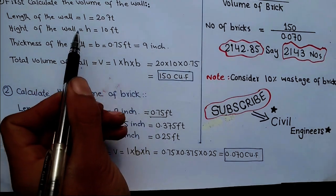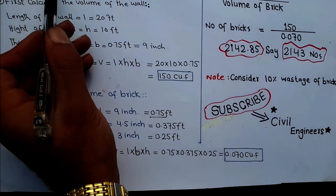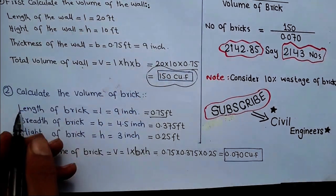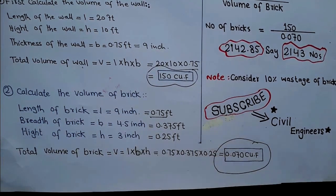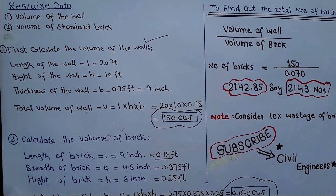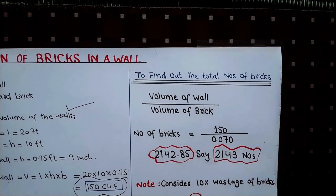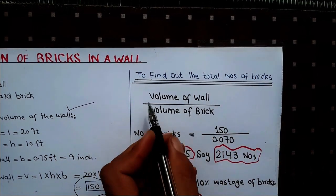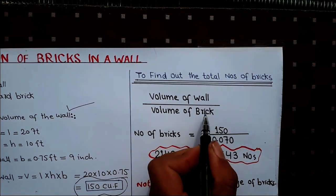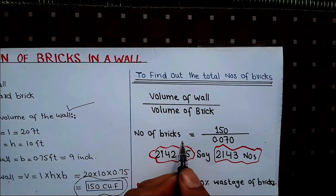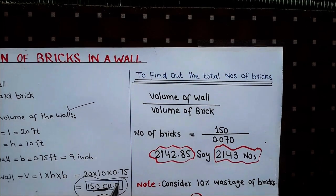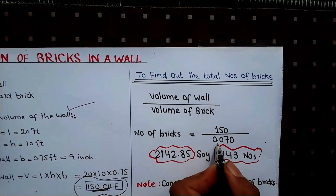So two things are now clear: the volume of the wall and the volume of the standard brick. Now we have to find out the total number of bricks. To find the total number of bricks, use the formula: Number of Bricks = Volume of Wall ÷ Volume of Brick = 150 ÷ 0.070.